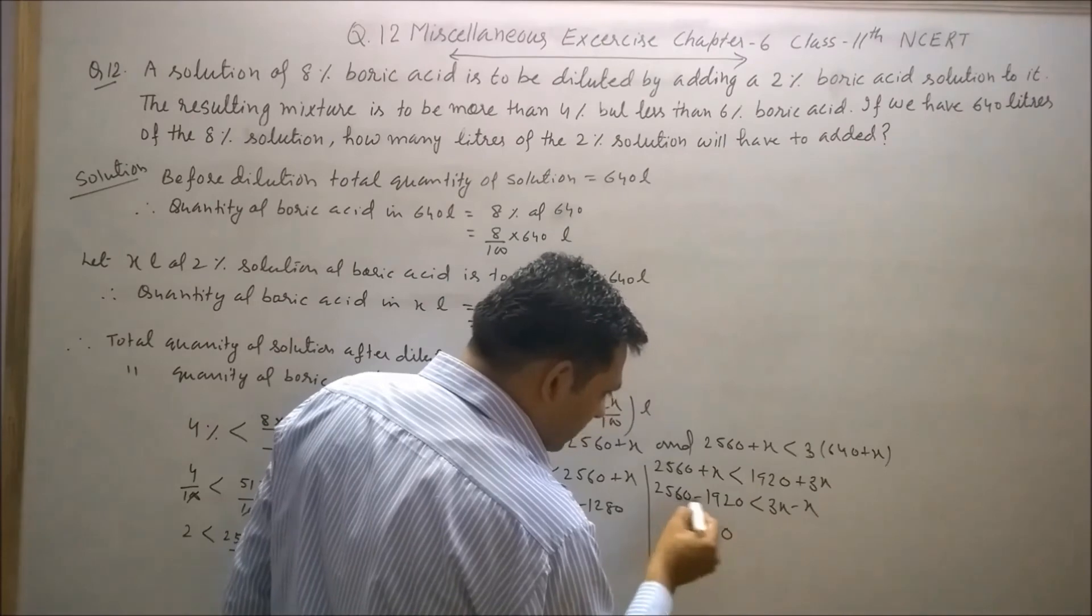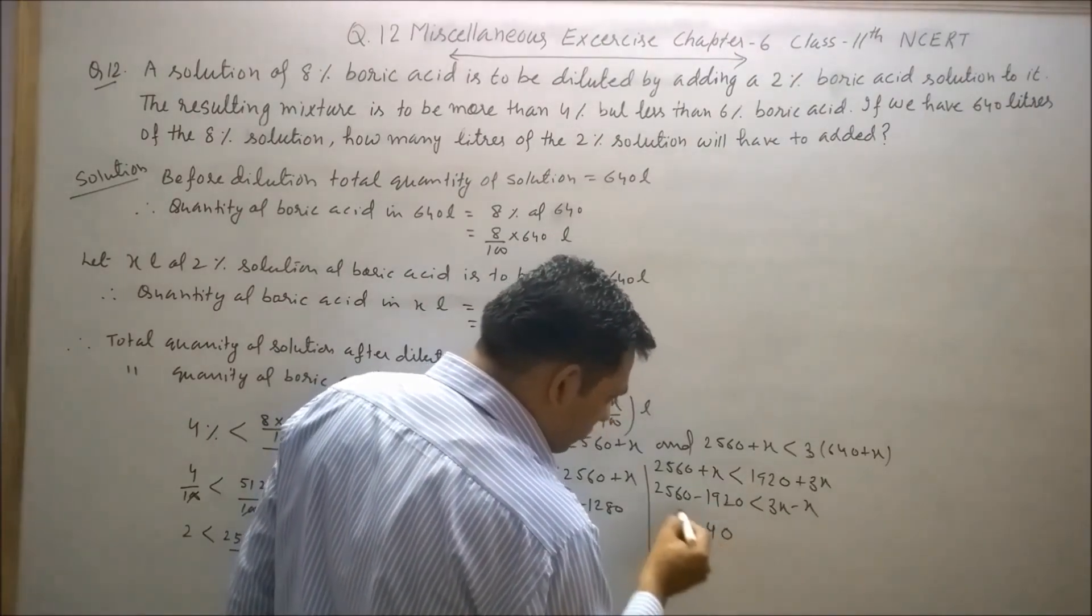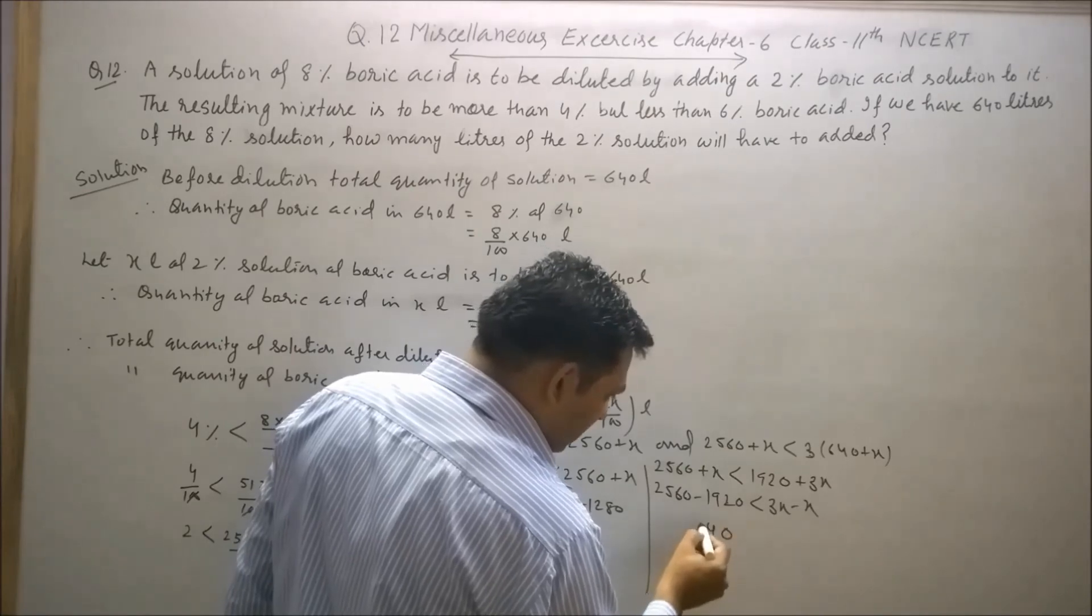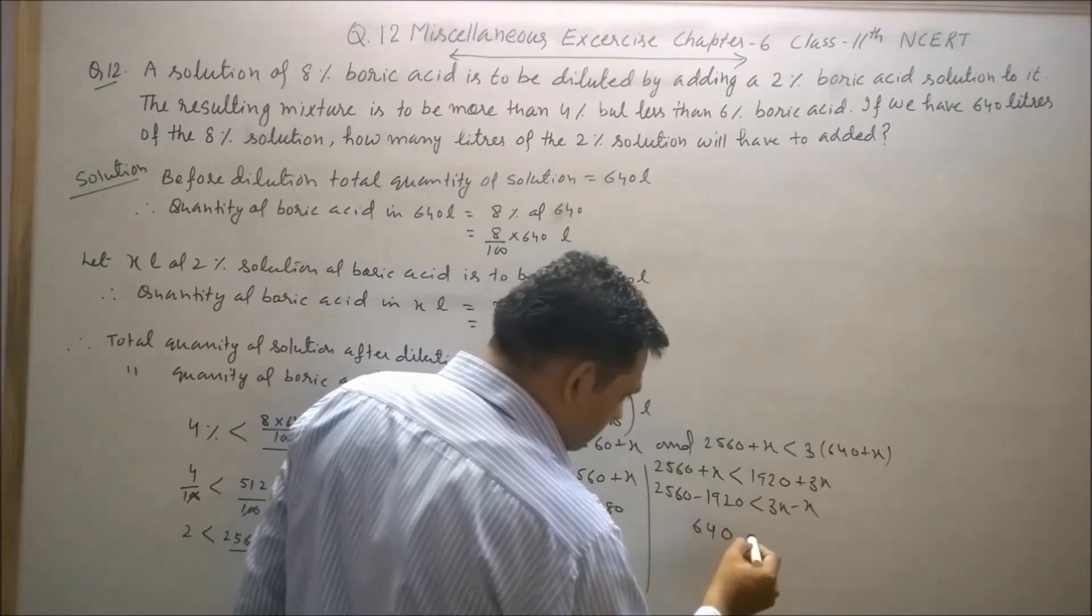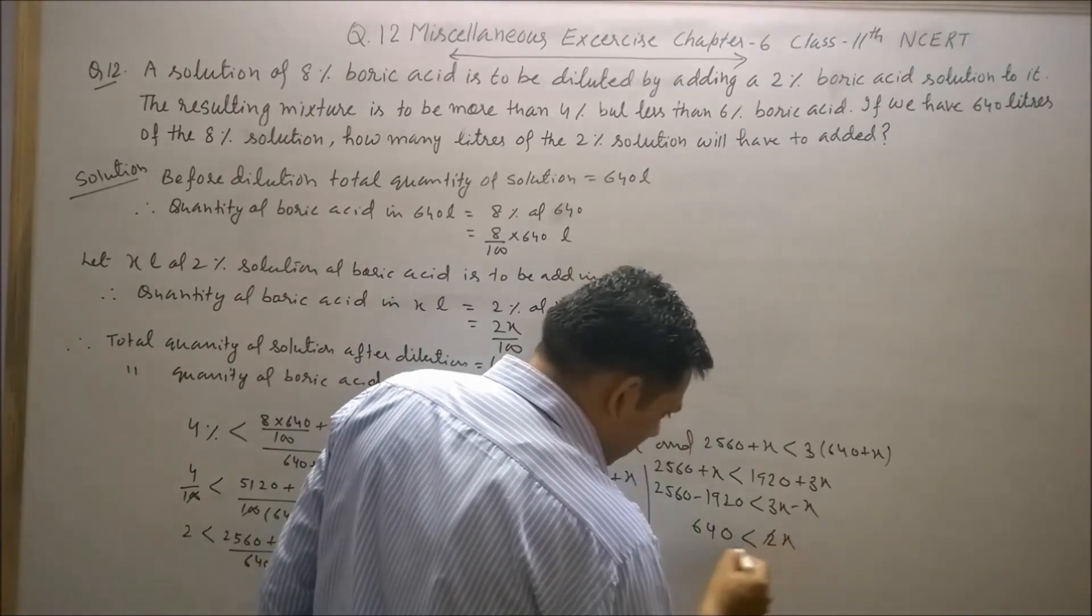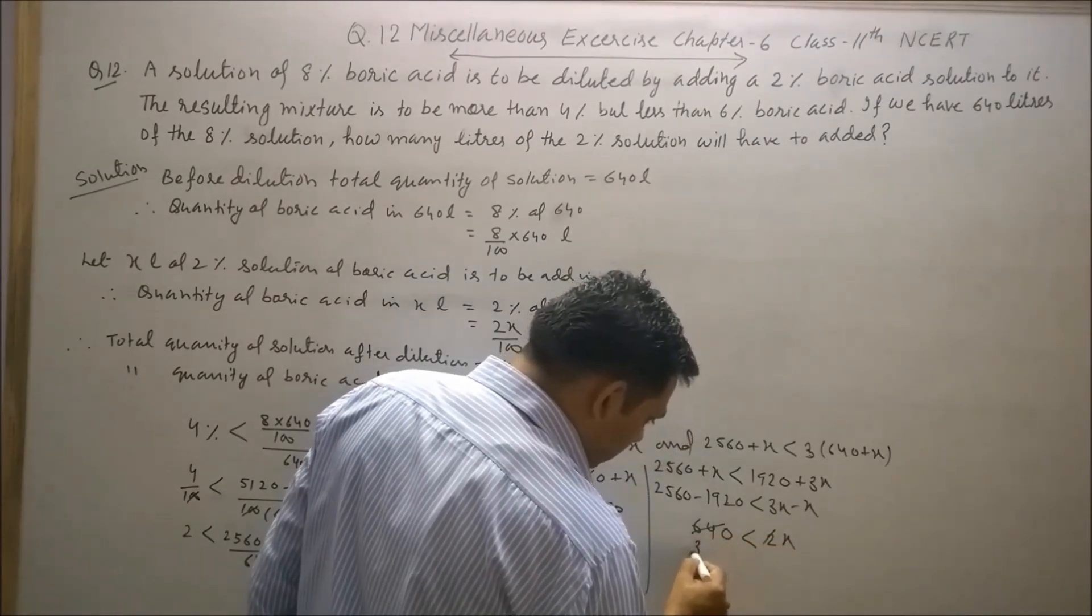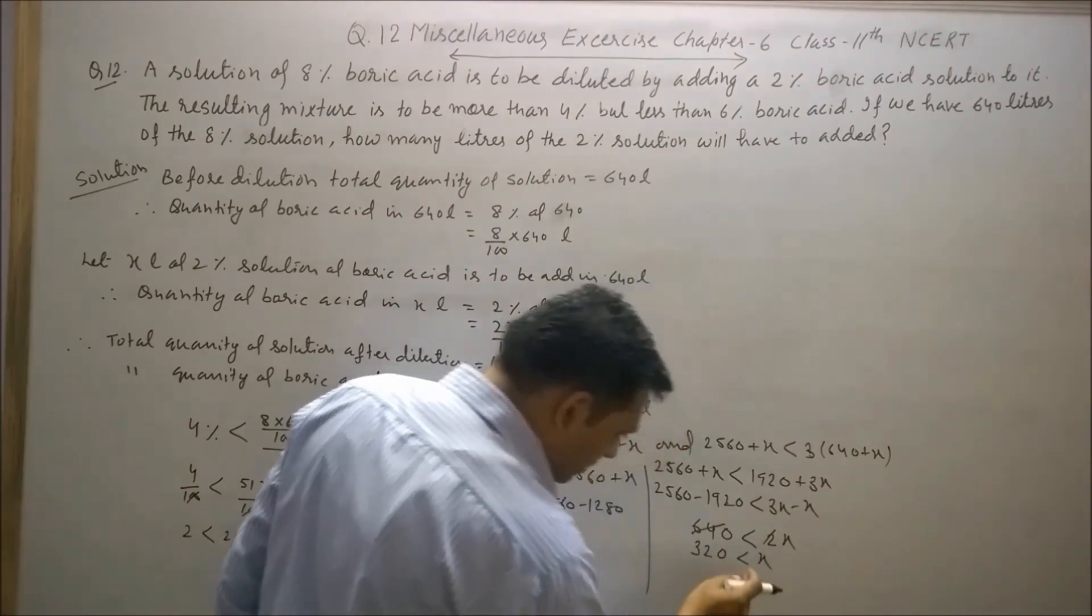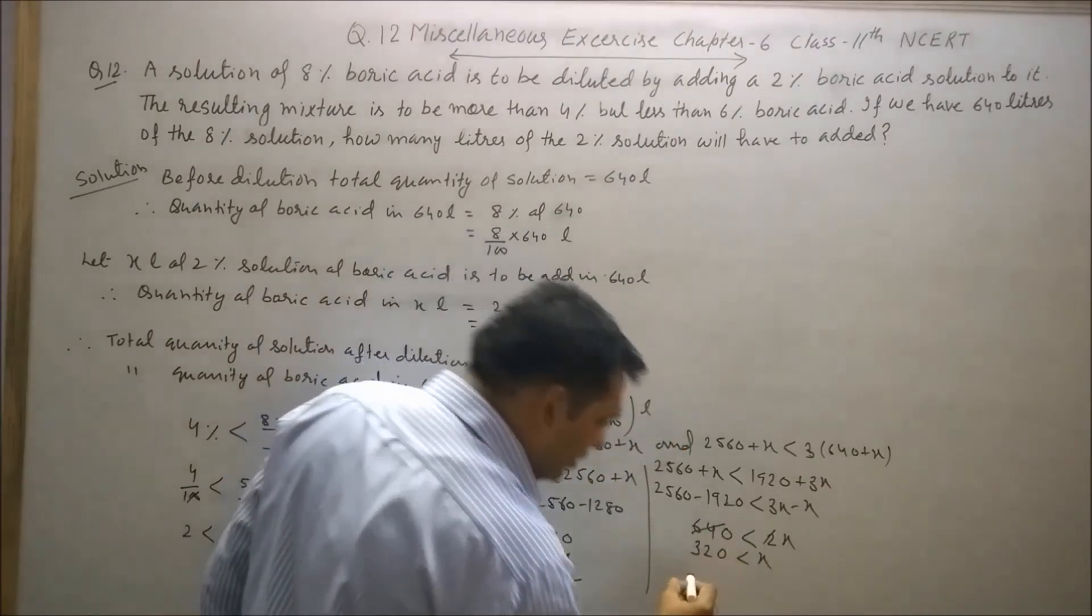6 minus 2 is 4, 15 minus 9 is 6, so 640 is less than 2x. Dividing: 2 into 6 is 3, 2 into 4 is 2, giving 320. Which means x is greater than 320 liters.